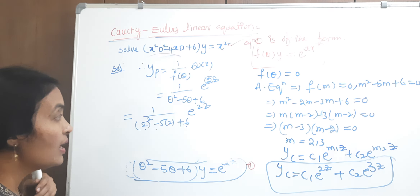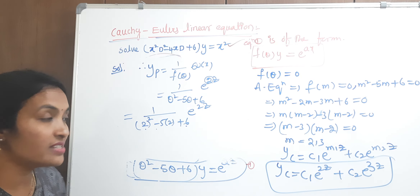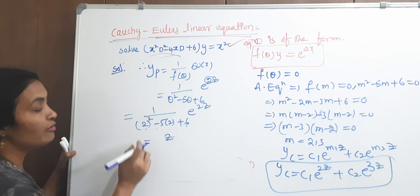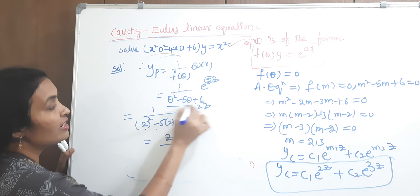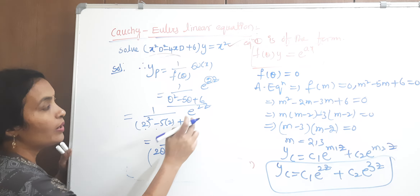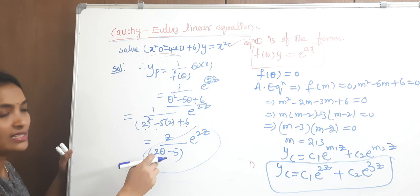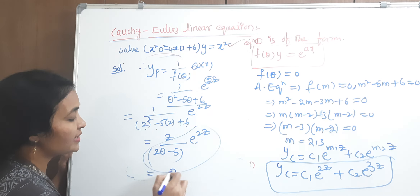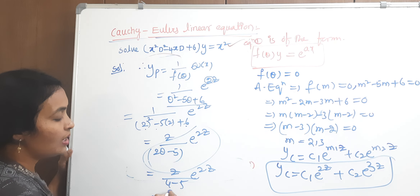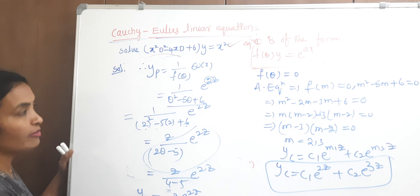Since the denominator is zero, we multiply by z and differentiate f(theta) with respect to theta. The derivative is 2·theta minus 5. Substitute theta equals 2: 2(2) minus 5 equals 4 minus 5 equals minus 1. So yp equals z over (minus 1) times e to the power of 2z, giving yp equals minus z·e to the power of 2z.